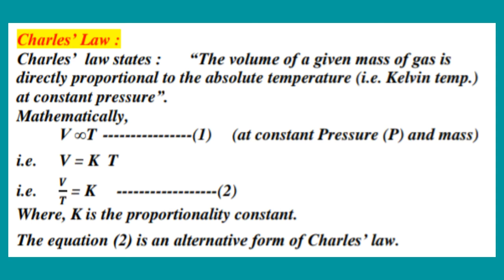After simplification, equation 1 becomes V equal to KT. When we replace the proportionality sign with an equals sign, we multiply by a constant K. So K is the proportionality constant. Again, after simplification, this equation V equal to KT becomes V by T equal to K. This is equation 2.